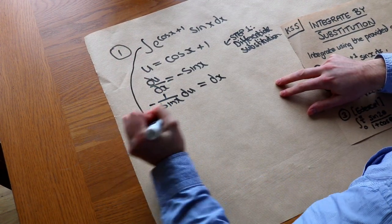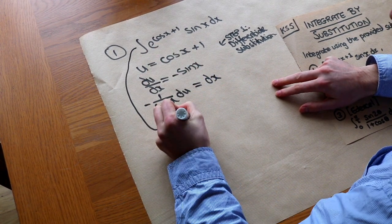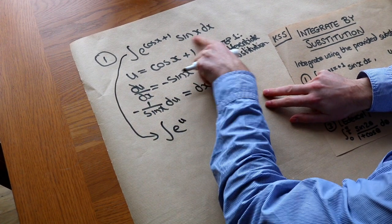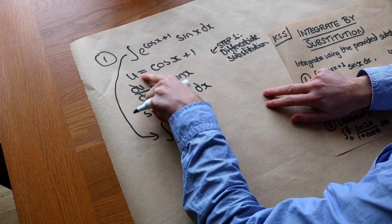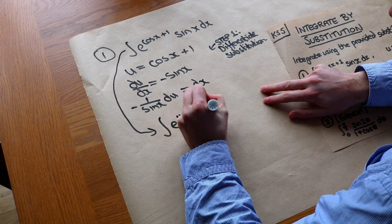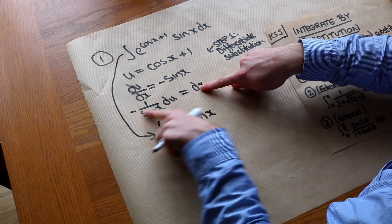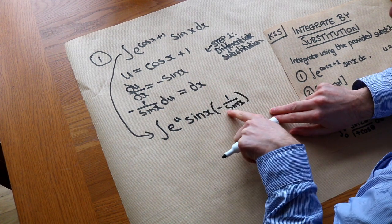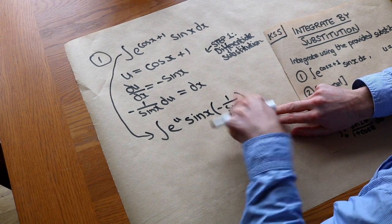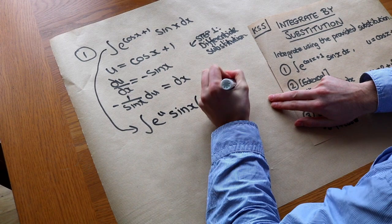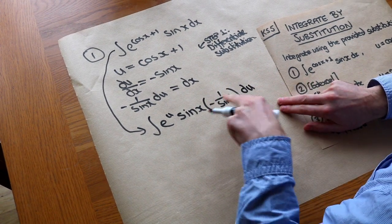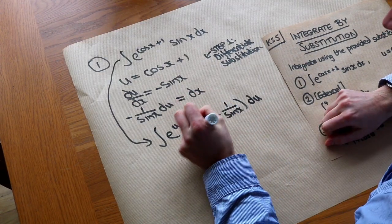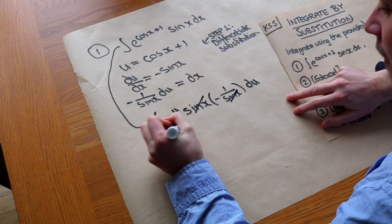Let's substitute in. We have the integral of e to the power of u — since cos x plus 1 is just u — then we still have the sin x, and the dx is replaced by minus 1 over sin x times du. Notice that the sin x here cancels with the over sin x, leaving something very simple.